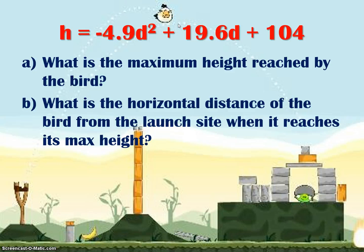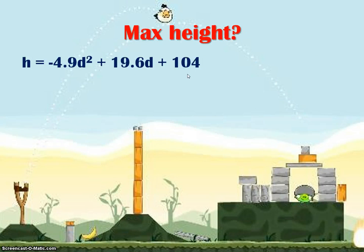Notice that the equation is already in standard form, and any time they ask you for a maximum or minimum, they're asking you to complete the square. So we're going to start by first isolating the d terms. We're going to put brackets around both d's and leave the 104 on the outside.